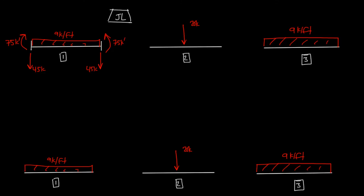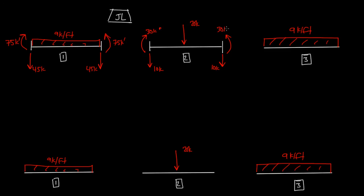Moving on to element 2, we assume this is a fixed end beam and draw our reactions at the end according to the direction of the loading. The 20 kip load is going down, so we have 10 kips on both sides going down. We have a moment going this way because that's what's causing the bending. If we calculate the fixed end moments on both sides, we get 30 kip-foot on the left and 30 kip-foot on the right.